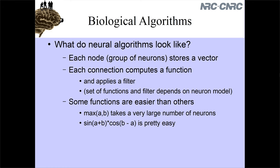The idea is that if we can examine that class of algorithms and build cognitive theories out of that class of algorithms, then we can build models that are more easy to tie to biology, more connected to biology, and it might give us very different insights into very different classes of algorithms to think about.